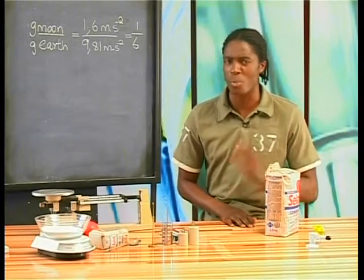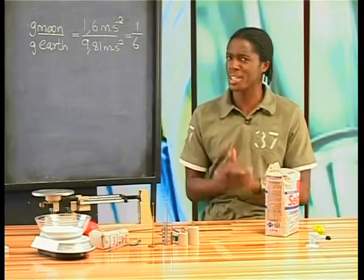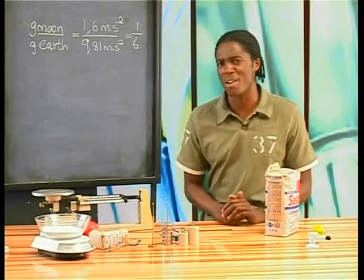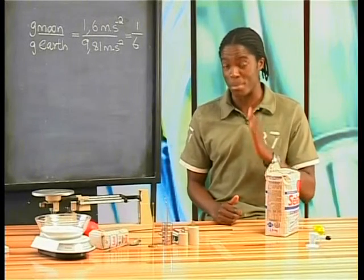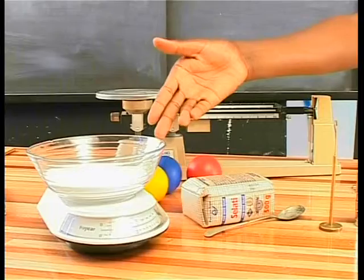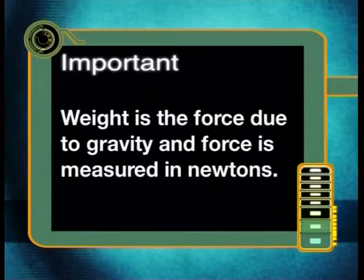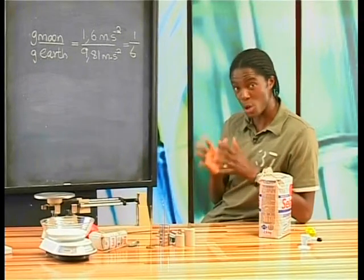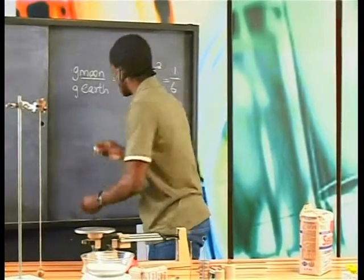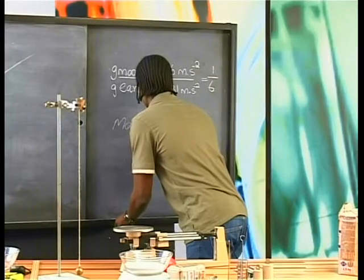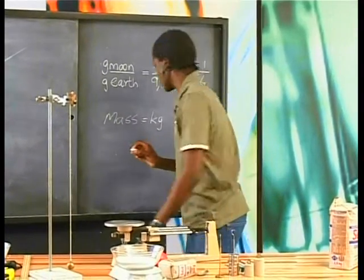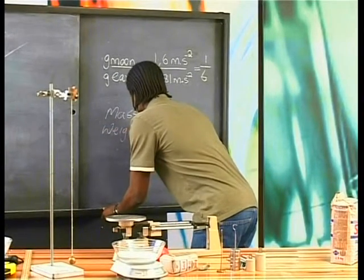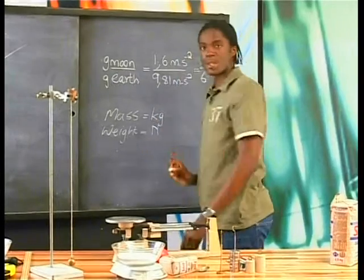Now that we've seen that there is a relationship between weight and gravitational acceleration, let's look at the relationship between weight and mass. Now I know these two words are often used to mean the same thing, but in physics, they actually have very different meanings. For example, this sample of sugar weighs 0.25 kilograms. But are we recording the weight of the sugar or the mass? Weight is the force due to gravity and force is measured in newtons, not in kilograms. So when we say the mass of sugar is 0.25 kilograms, we're actually talking about the mass, not its weight. Mass is measured in kilograms, and weight is measured in newtons — that's in physics.